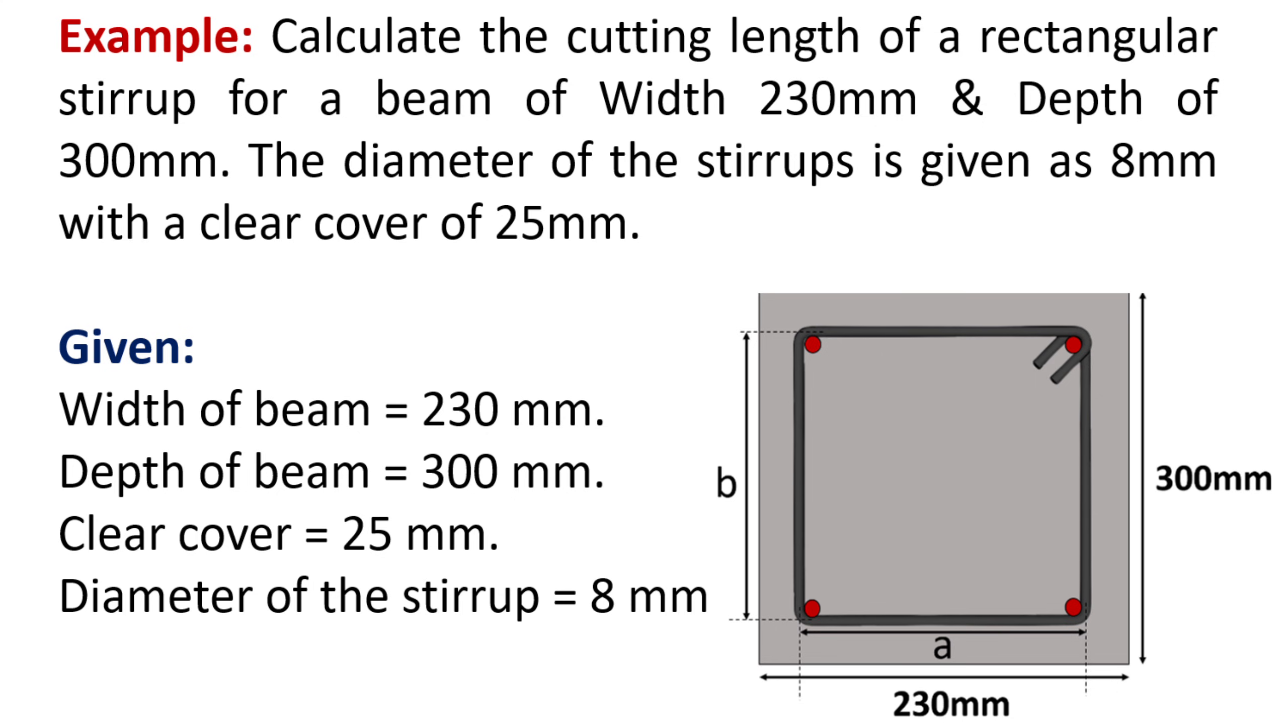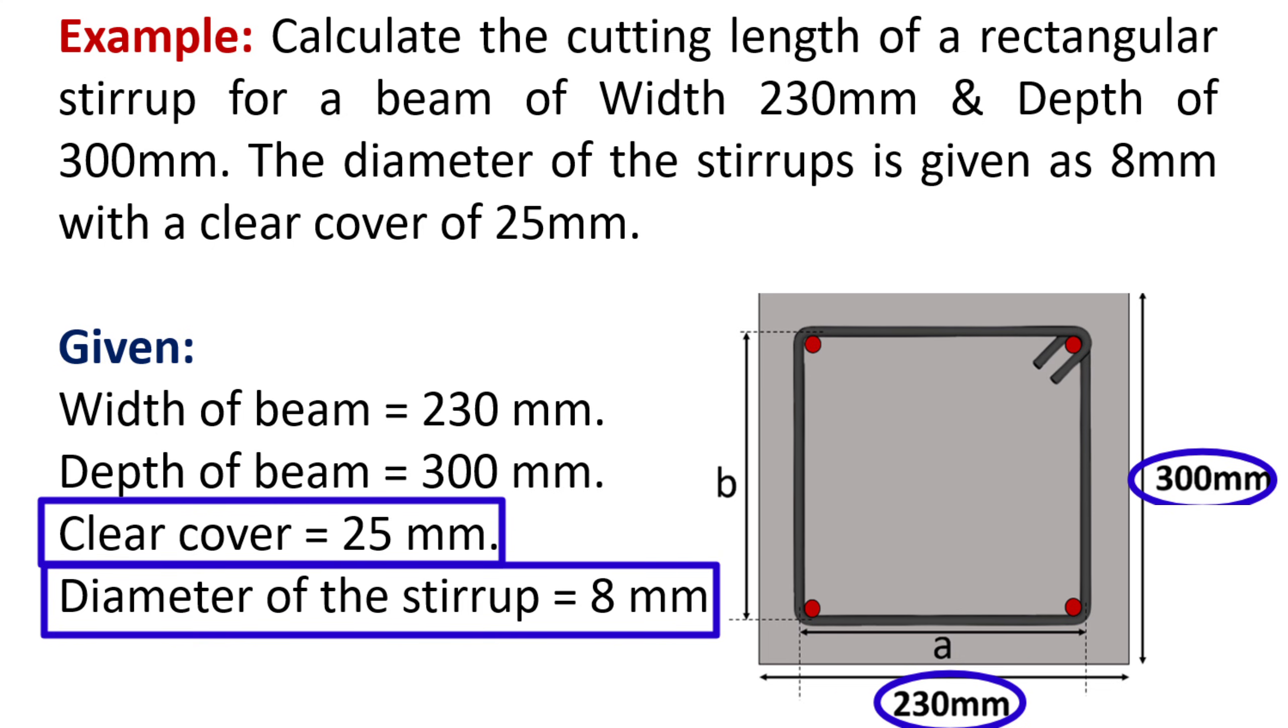Let's suppose we need to calculate the cutting length of a rectangular stirrup for a beam of width 230 mm and depth of 300 mm. The diameter of the stirrups is given as 8 mm with a clear cover of 25 mm.